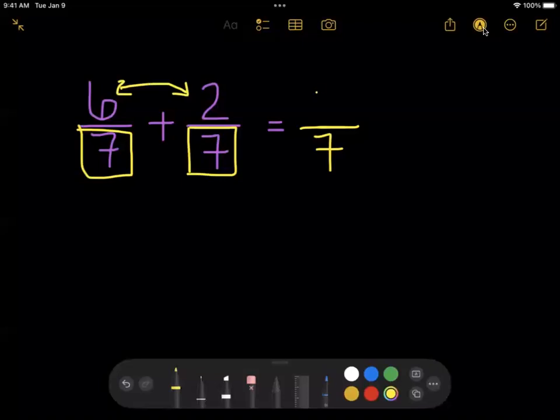Six plus two equals eight, so if you have six sevenths and then you add another two sevenths to that, in total, you would have eight sevenths.